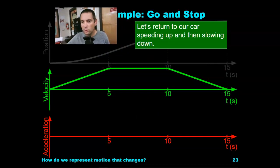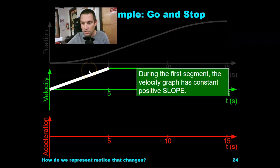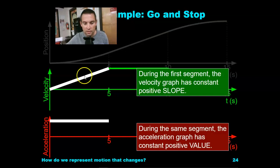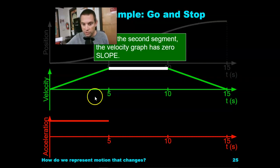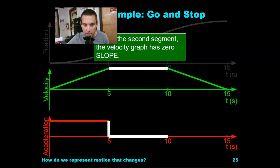Let's return to our car speeding up and then slowing down. During the first segment, the velocity graph has a constant positive slope — constant positive acceleration. The second segment, the velocity graph has zero slope — flat line, zero slope, zero acceleration.